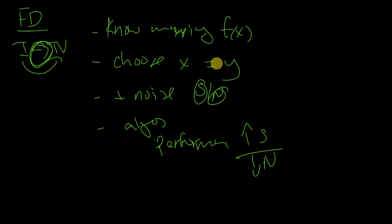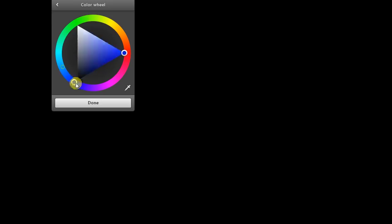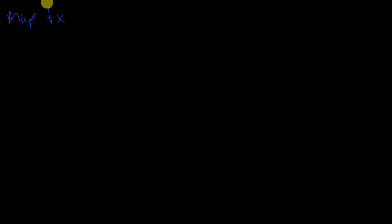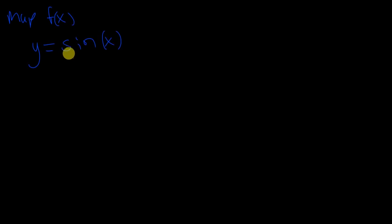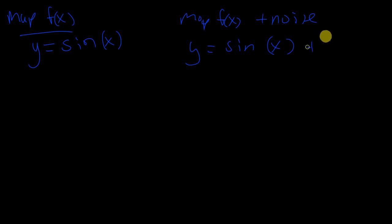The mapping function we're going to use is quite simple: Y equals the sine of X. No heavy math here. To add noise, our mapping function becomes Y equals sine(X) plus noise. We're going to graph all this as well, to make it more intuitive.